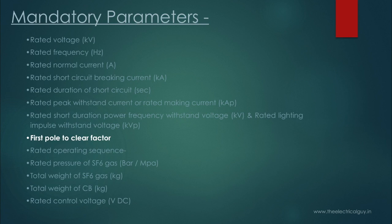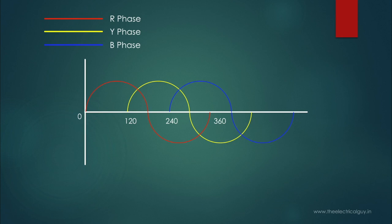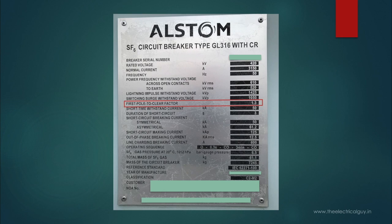First pole to clear factor: in a 3-phase circuit breaker, arc extinguishes during current zero. Because currents are out of phase by 120 degrees in a 3-phase AC circuit, current interruption is not simultaneous — contact of one pole will open before the other two. The power frequency recovery voltage across the first pole to open is therefore more than the others, and this is called the first pole to clear factor. It is given as a multiple of the normal system voltage; on the nameplate it is mentioned as 1.3, meaning the first pole to open will have 1.3 times the normal system voltage across it.